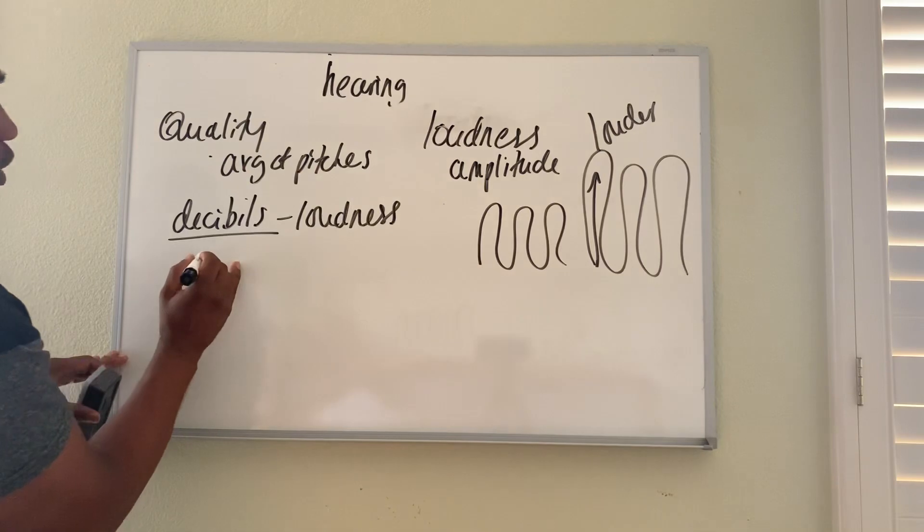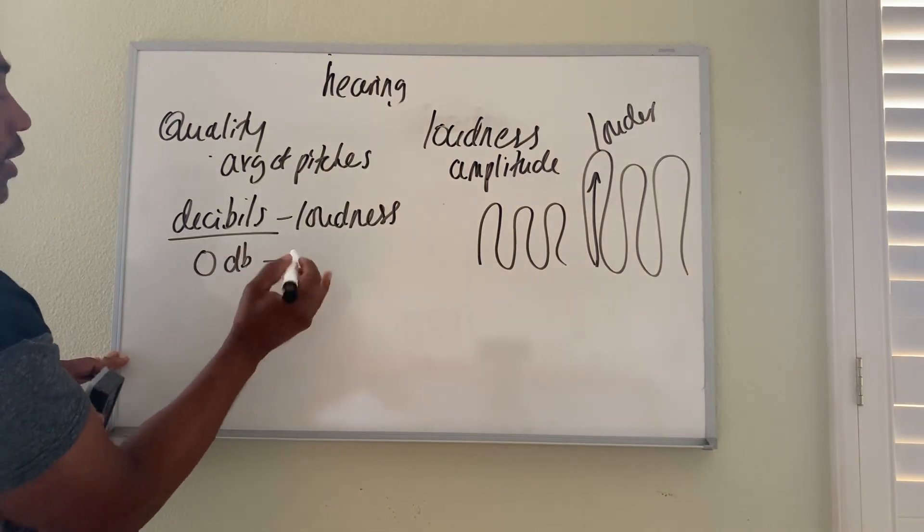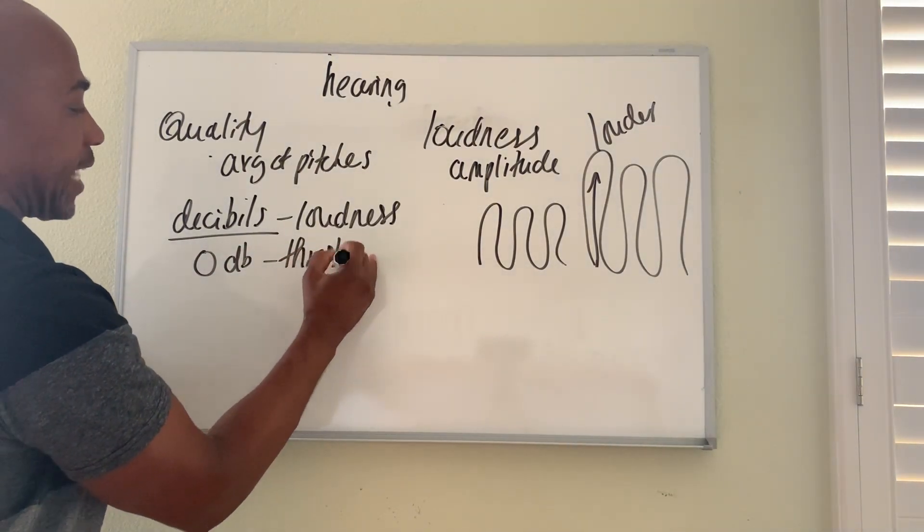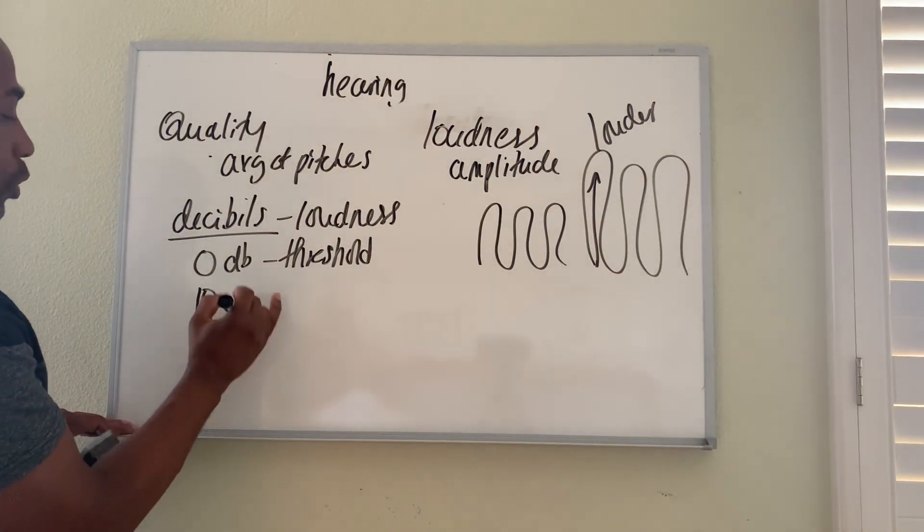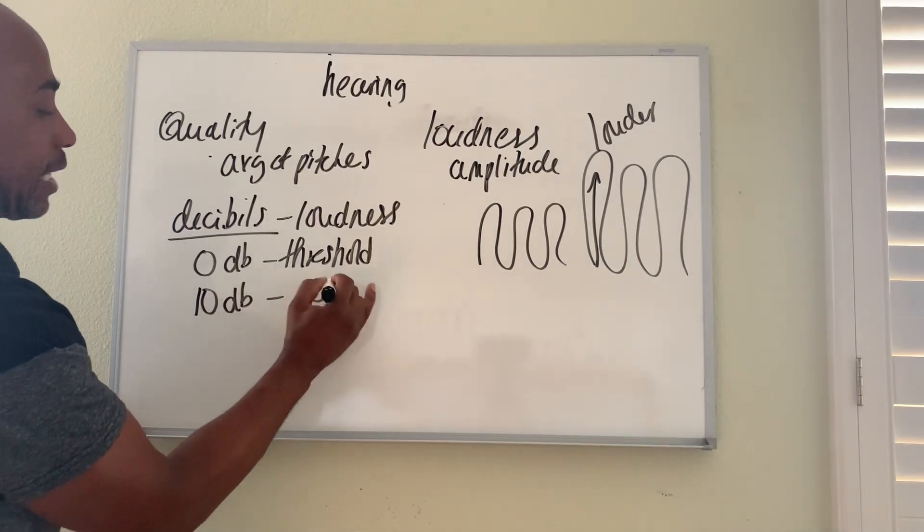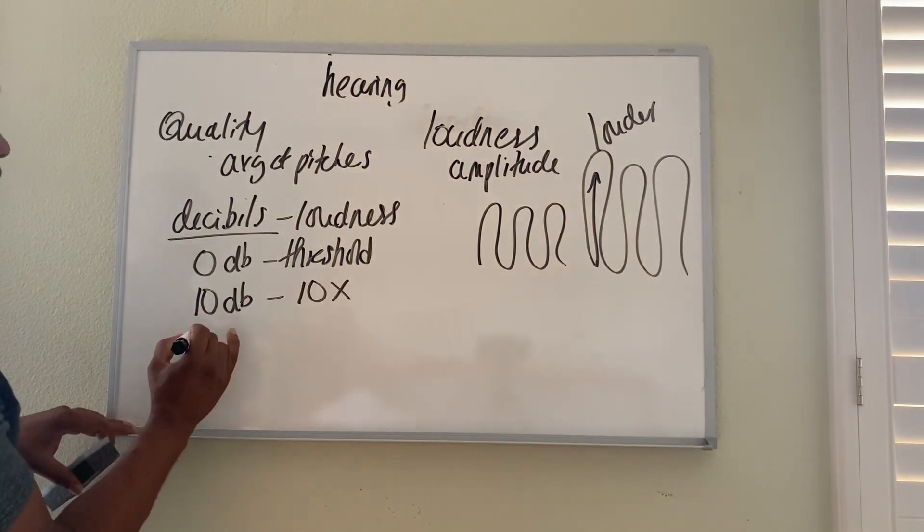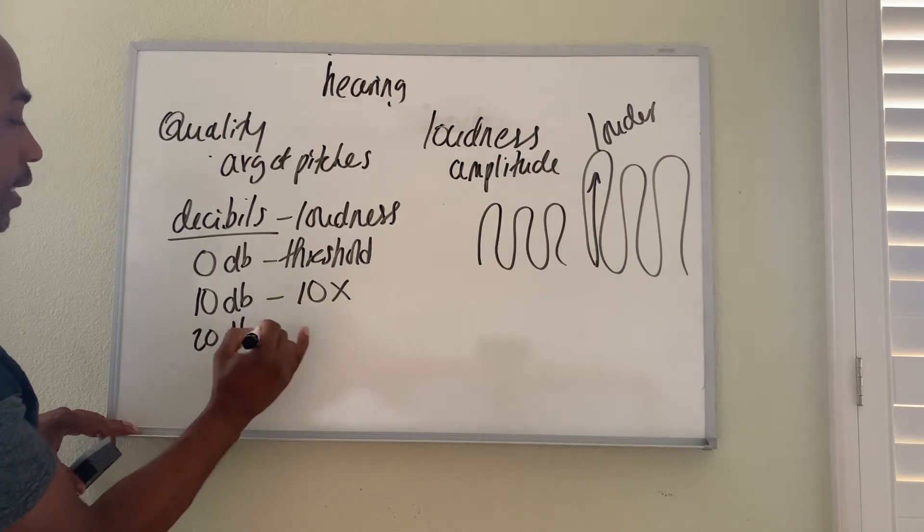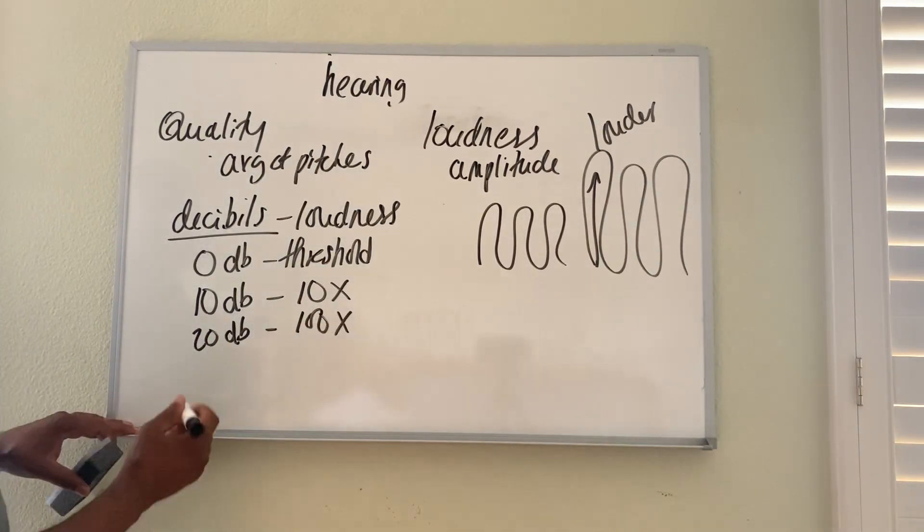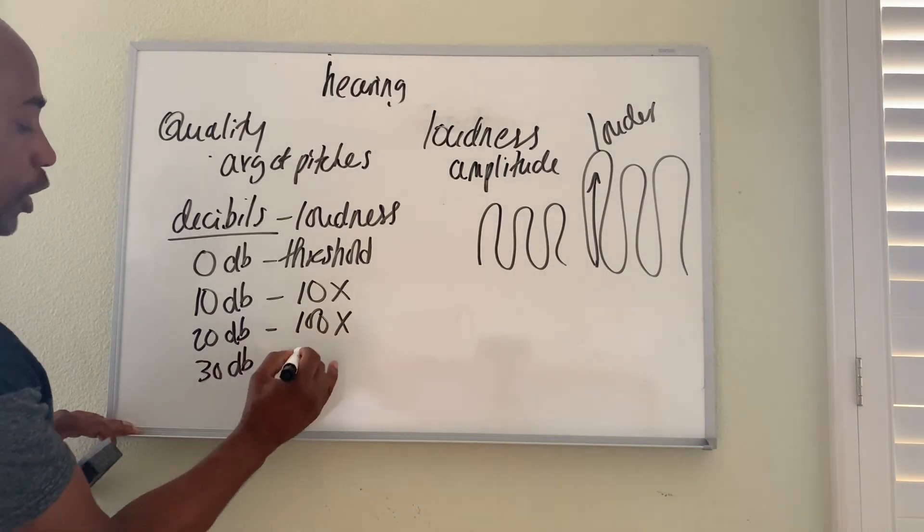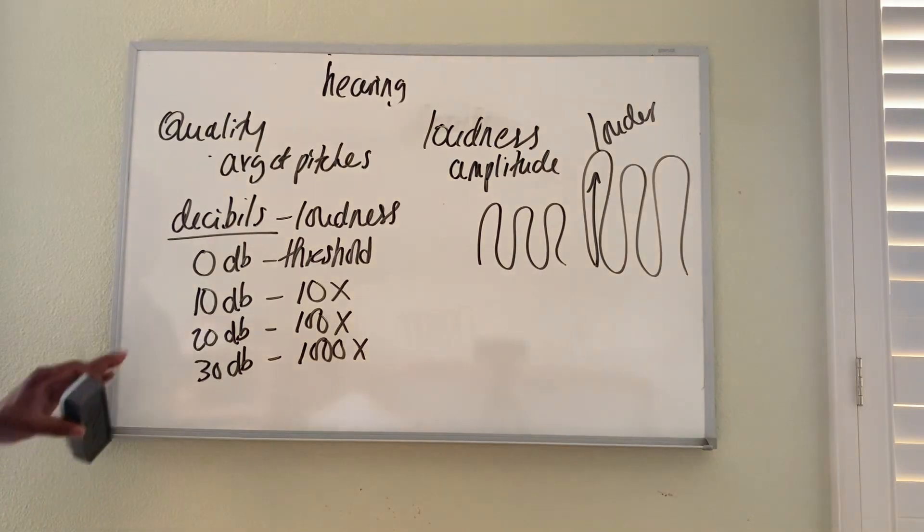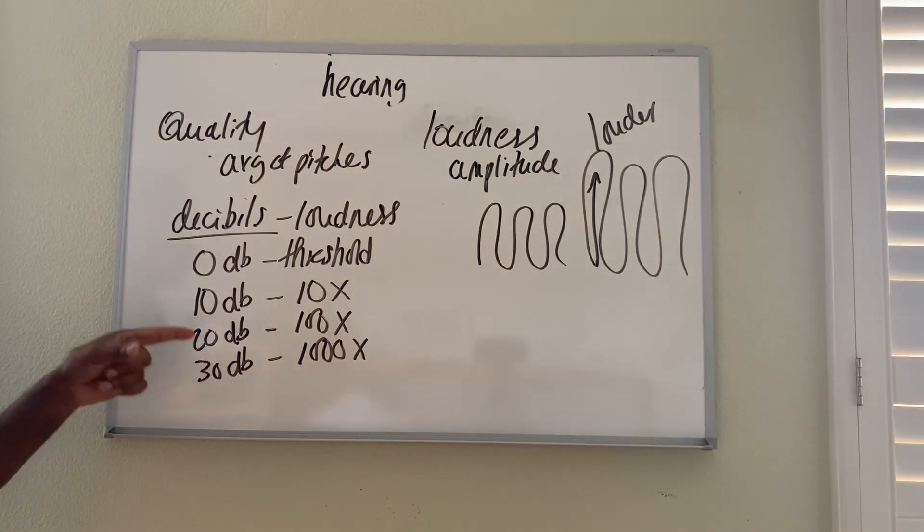And so at zero decibels, that's the threshold for hearing. At that level, you can barely hear anything at all. At 10 decibels, that means you're now 10 times louder than threshold. At 20 decibels, it means you're 100 times louder. And at, say, 30 decibels, it means you're 1,000 times louder than threshold. So don't get tricked. 20 doesn't mean 20 times. 20 means 100 times. The number tells you how many zeros you get, how many powers of 10 you're playing with there.